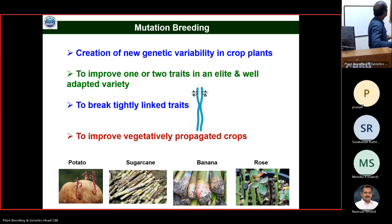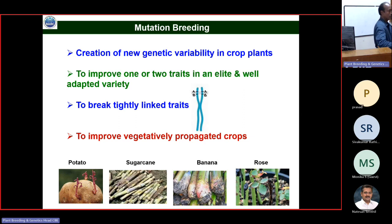You might have gone through your mutation breeding course and know that mutation breeding can be used for creating new genetic variability in crop plants when there is no variability available in the germplasm. You can also go for mutation breeding when you want to improve one or two unique traits in a very good variety — that is an elite variety — or when you want to break a tightly linked character or genes. And to improve vegetatively propagated crops, this is the only way to create genetic variability.